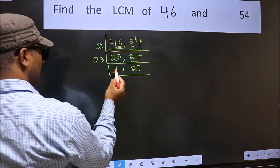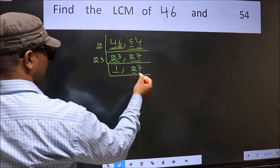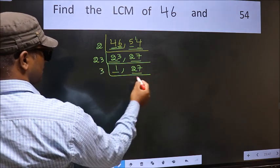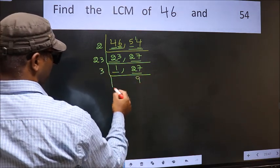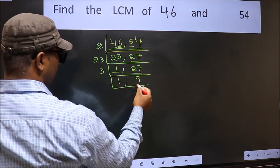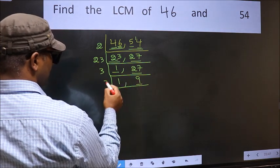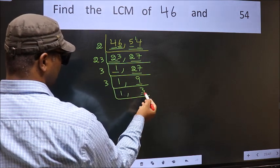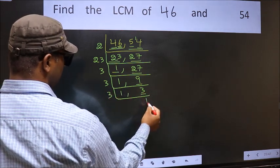Now we got 1 here, so focus on the next number, 27. 27 divided by 3 is 9, then 9 divided by 3 is 3. Now we have 3. 3 is a prime number, so 3 times 1 is 3.